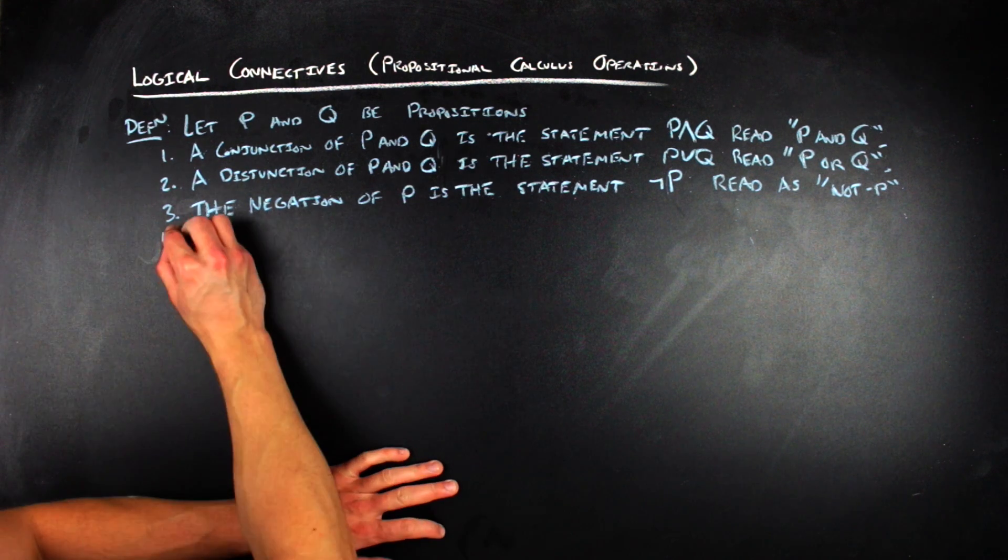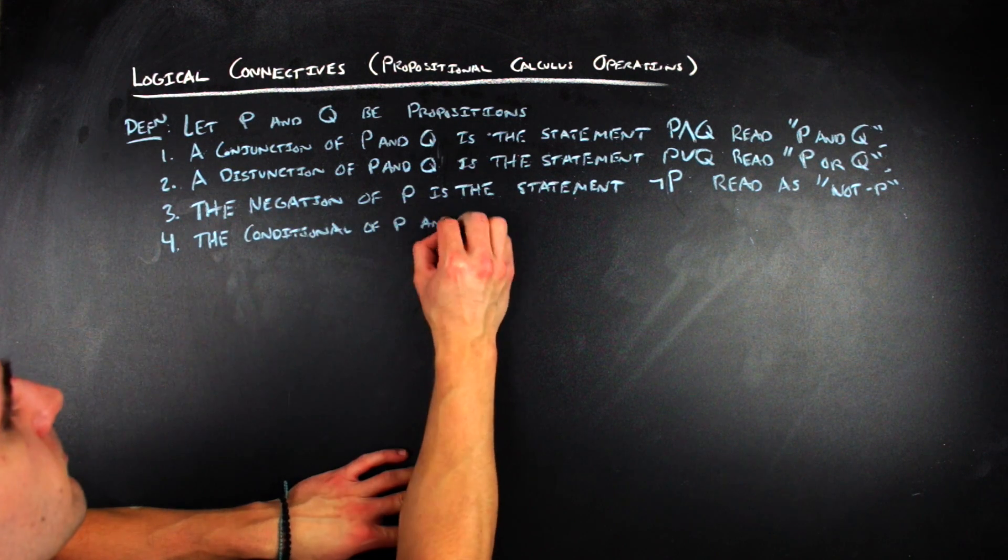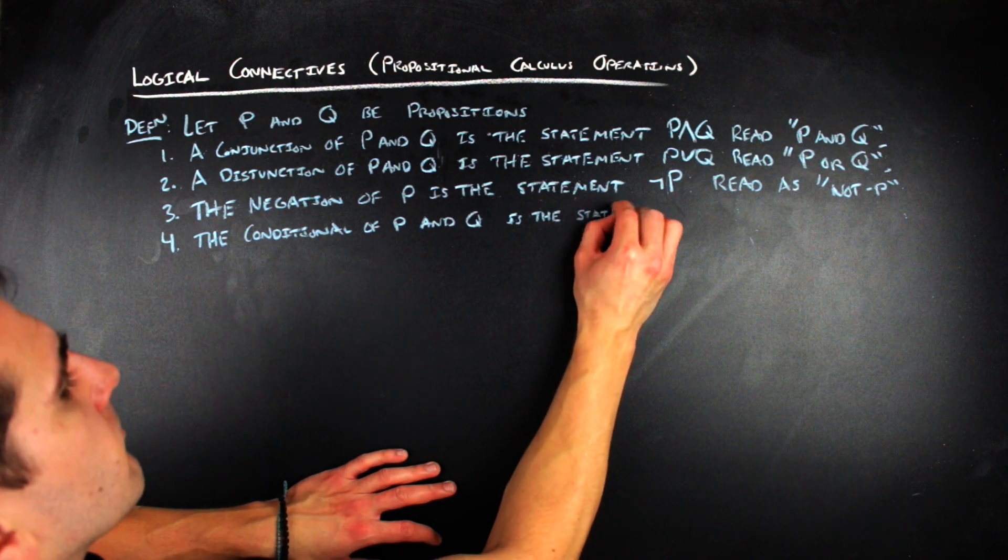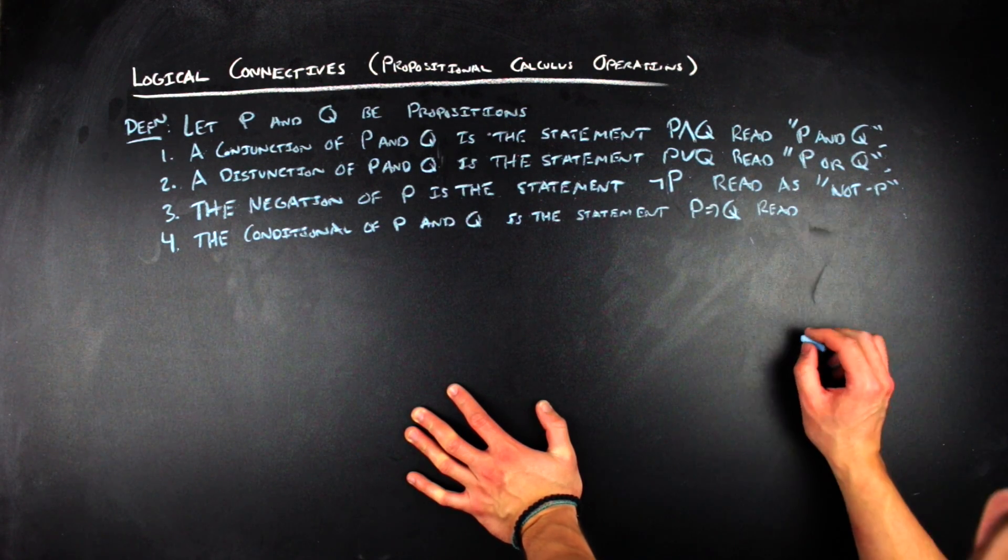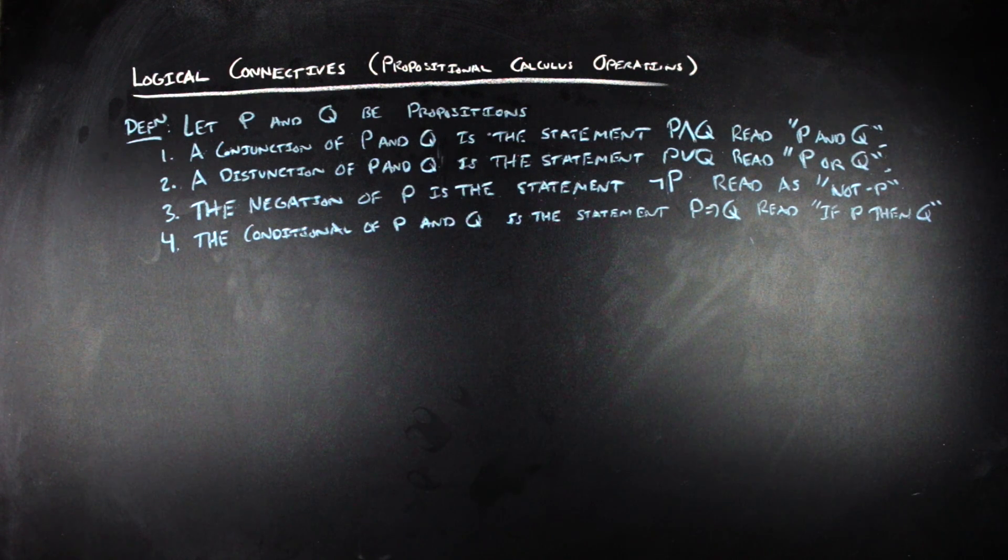Four, the conditional formed from P and Q is the statement P implies arrow Q, which is read as if P then Q. Sometimes the arrow isn't double barred.